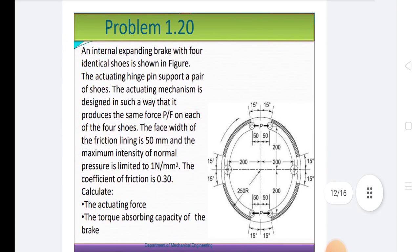There are some such types of problems like an internal expanding brake with four identical shoes as shown in figure. The actuating hinge pins support a pair of shoes. The actuating mechanism is designed in such a way that it produces the same force on each of four shoes. The face width of the friction lining is 50 mm and the maximum intensity of normal pressure is limited to 1 N/mm². The coefficient of friction is 0.30. Calculate the actuating force and the torque absorbing capacity of the brake.